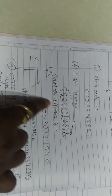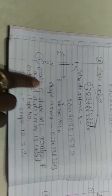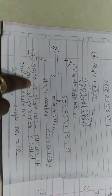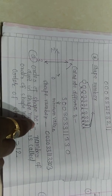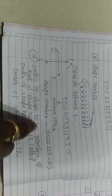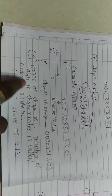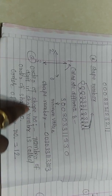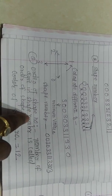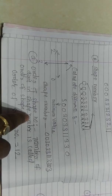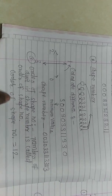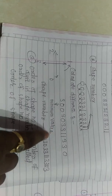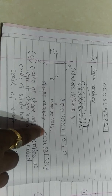The shape number is written starting from the minimum value position. The shape number is: 0, 0, 3, 0, 3, 3, 1, 1, 3, 3, 0, 2, 3. This is our shape number. The order of the shape number is simply the number of digits in the shape number.